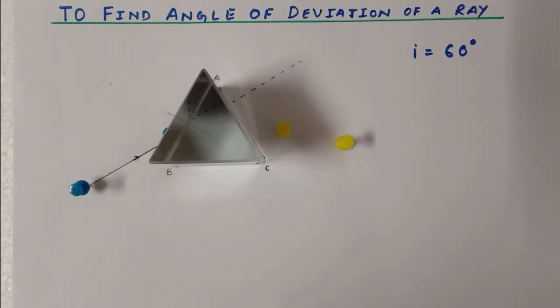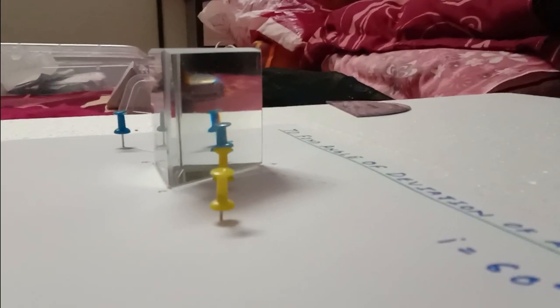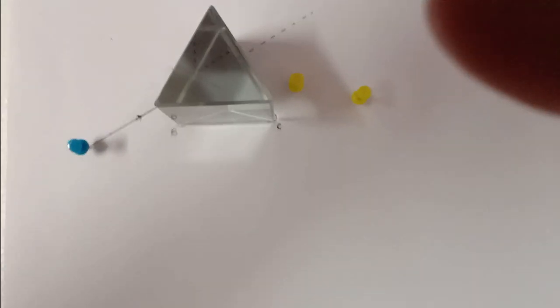I have arranged these two pins from here. You must make sure you keep one eye closed while arranging the pin. As you can see, the pins which I had arranged on the incident ray are visible from the AC side, and now you can see that all four pins are arranged in a straight line. We are good to go.